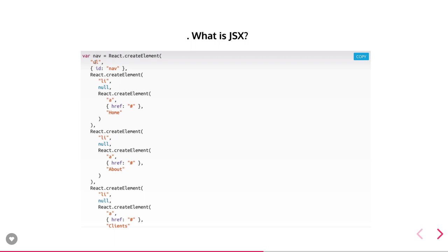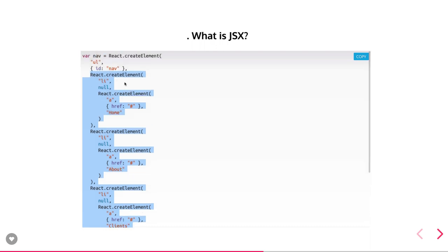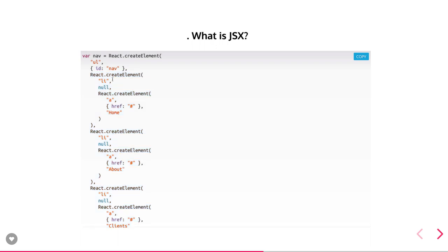Every DOM node will be parsed into three things. It will be converted into React.createElement, which takes three arguments. First, the tag name; second, the attributes of that tag; and third, all the children inside the tag. For example, inside a ul I have a list of li tags, so I write React.createElement — first argument is the tag name, second is the attribute on the ul tag, and third is the children.